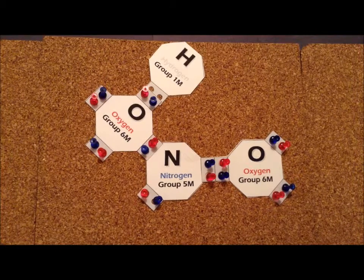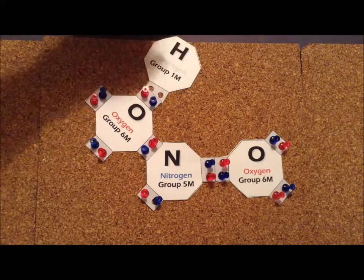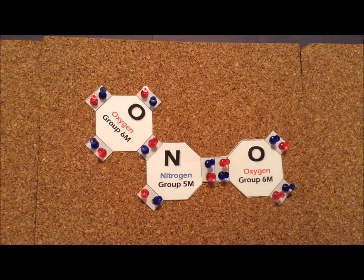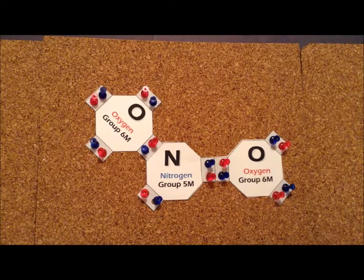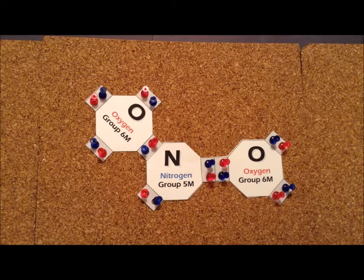Nitrous acid is a weak acid. When it ionizes, it loses H+, and leaves behind electrons, so that we have the nitrite ion. So we see the nitrite ion has 18 electrons.